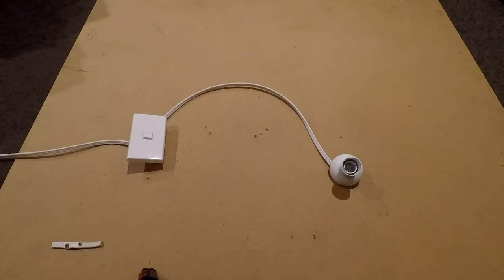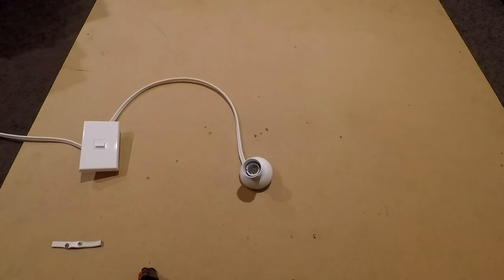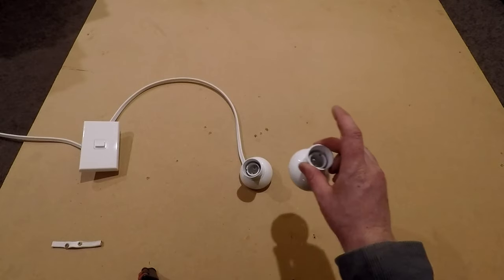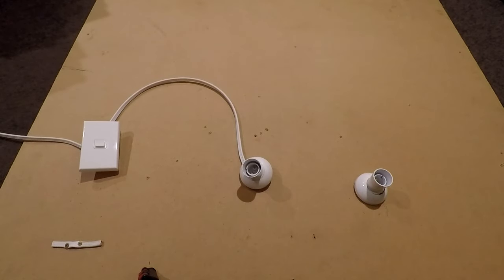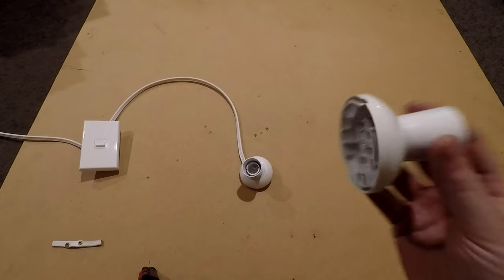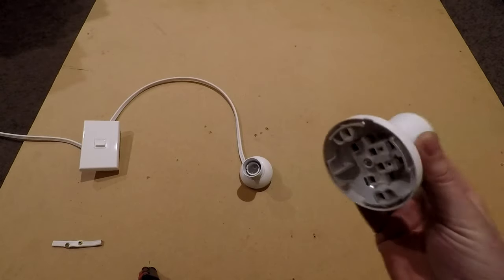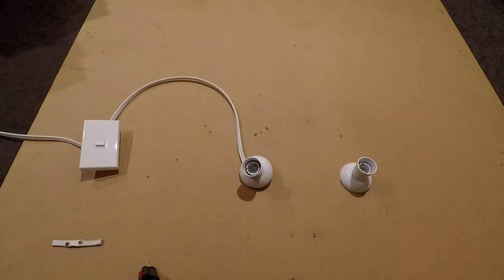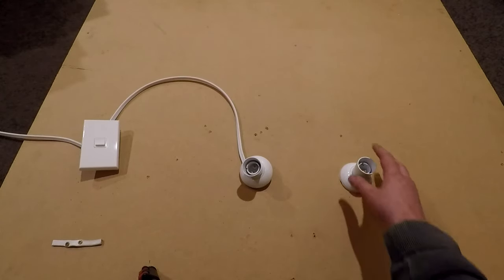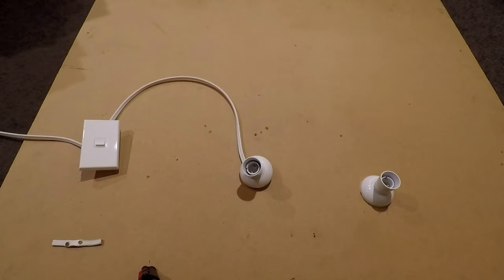So today we're going to be introducing a second light fitting to this light circuit. For this demonstration, I am using these PDL 629 batten holders. With respect to residential lighting circuits, this is the same for any type of light fitting, whether it be these down lights or some other type of fitting.